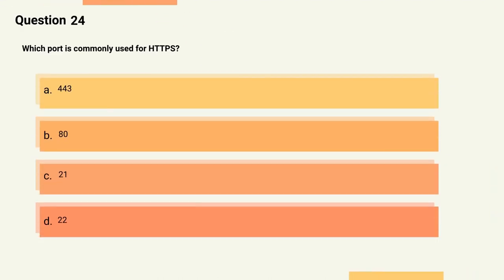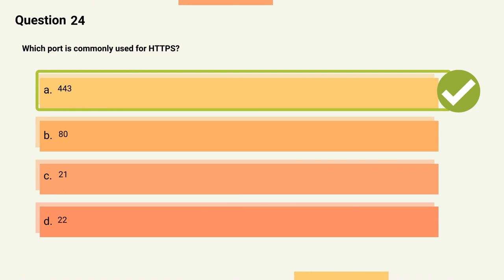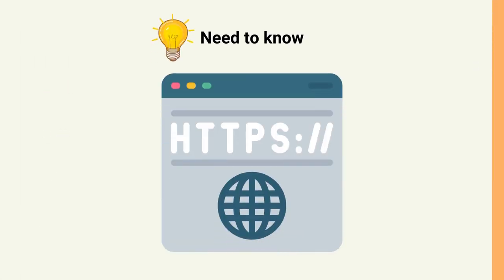Question 24: Which port is commonly used for HTTPS? Options: A) 443, B) 80, C) 21, D) 22. The correct answer is Option A, 443. Explanation: Port 443 is the default port used by the HTTPS protocol for secure web traffic.